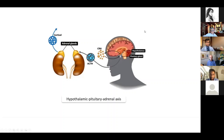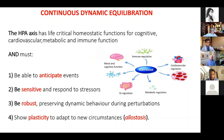Cortisol goes on to have multiple effects throughout the body, including acting back on the brain itself. One remarkable thing about cortisol is that it's a single hormone acting on multiple different systems. The HPA axis is absolutely life-critical — it's the only hormonal system you absolutely need for life — and it's critical for cognitive, cardiovascular, metabolic, and immune function.